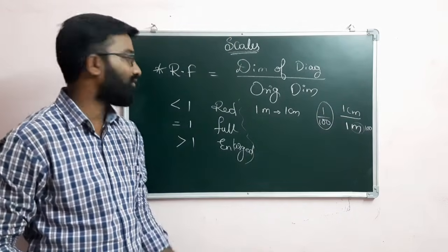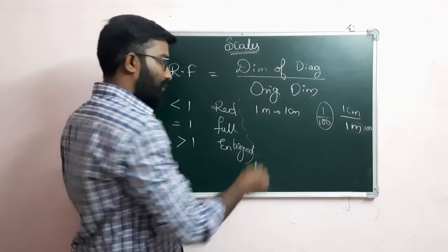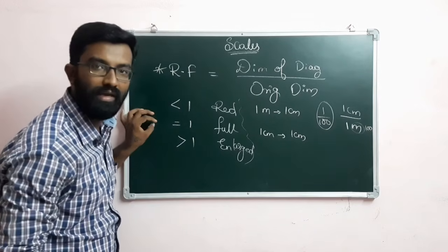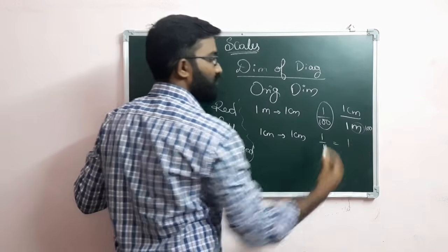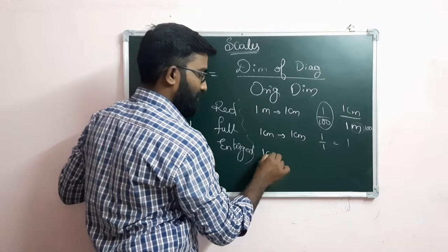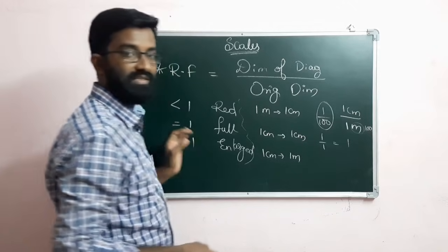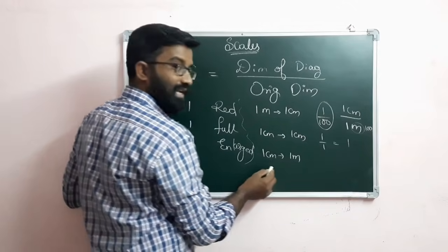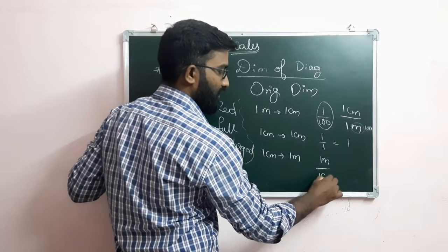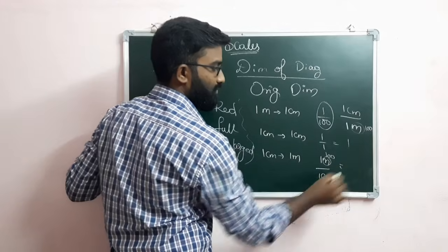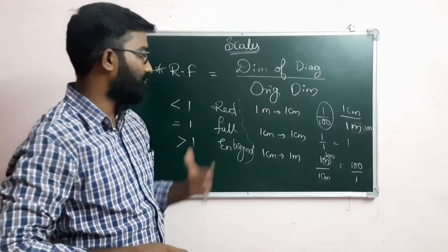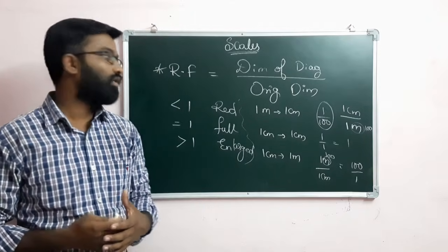For example, if a 1 cm line represents 1 cm, then it is 1 by 1. If a 1 cm line represents 1 m, then the original length is 1 m which equals 100 cm. So RF is 1 by 100, and since 100 is greater than 1, it is an enlarged scale.